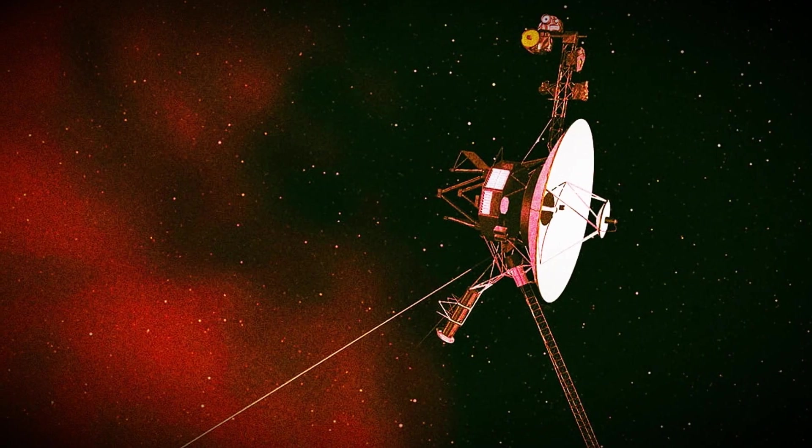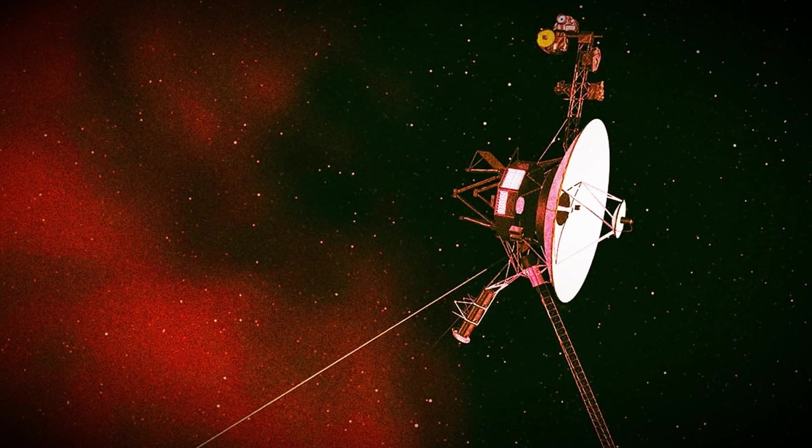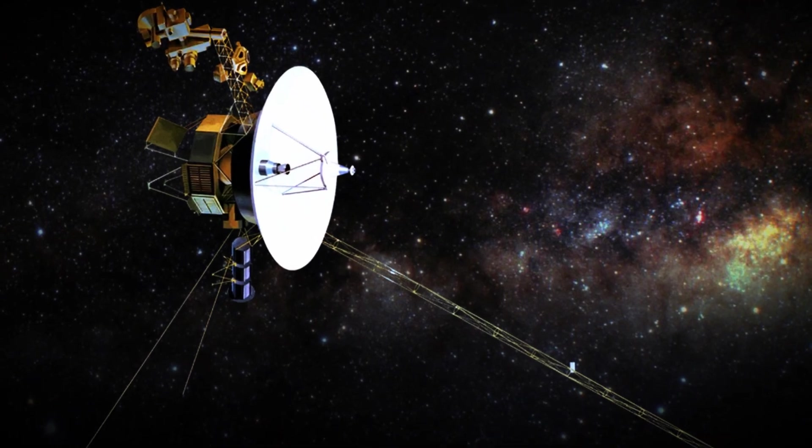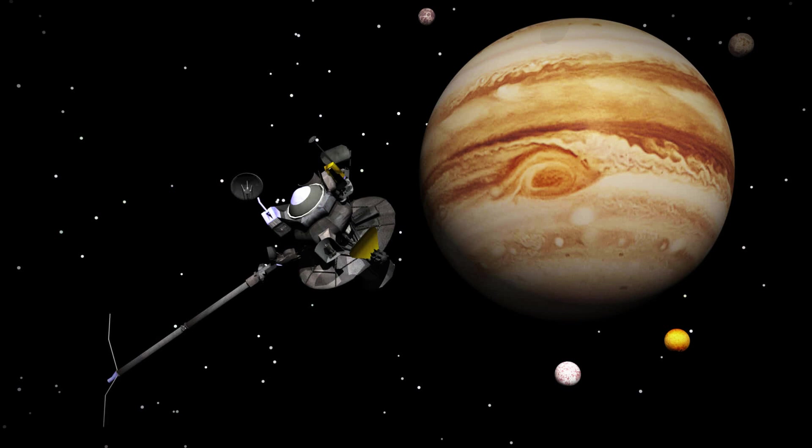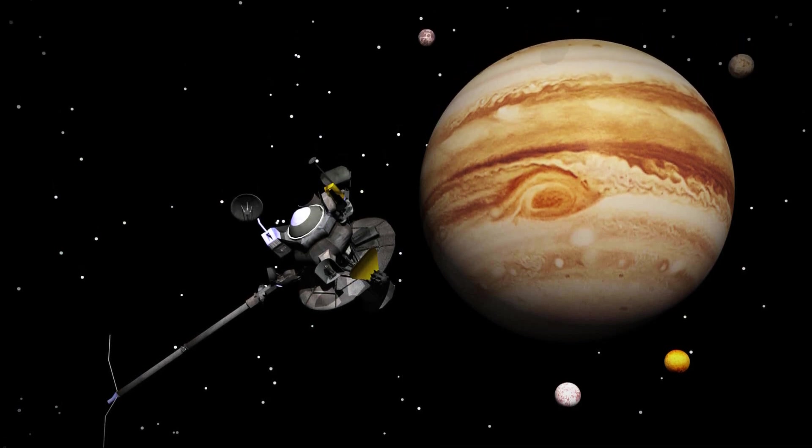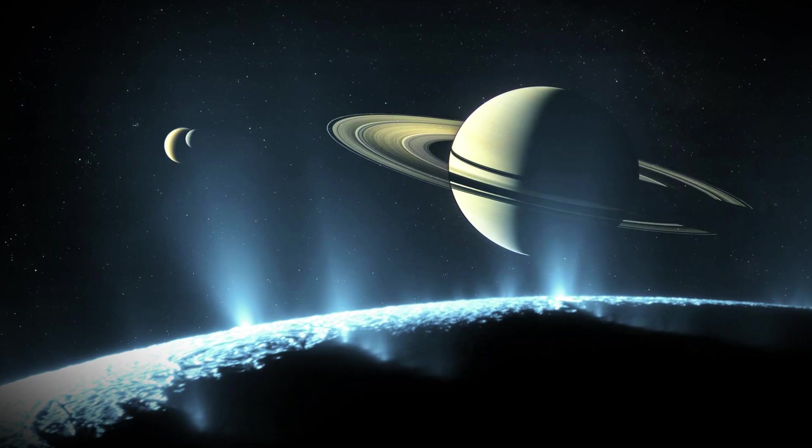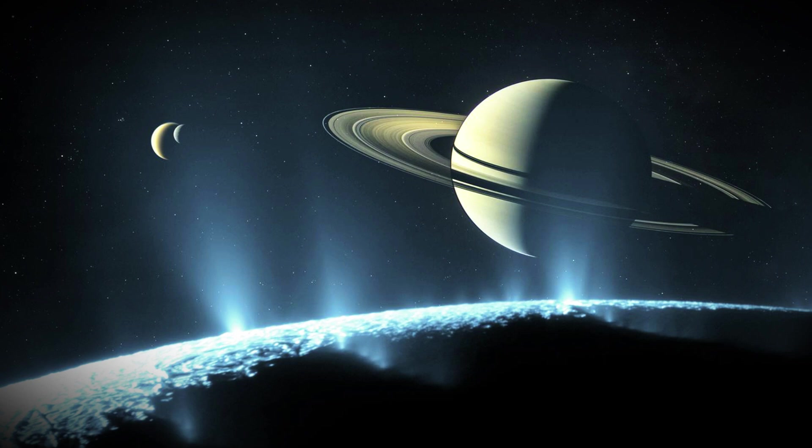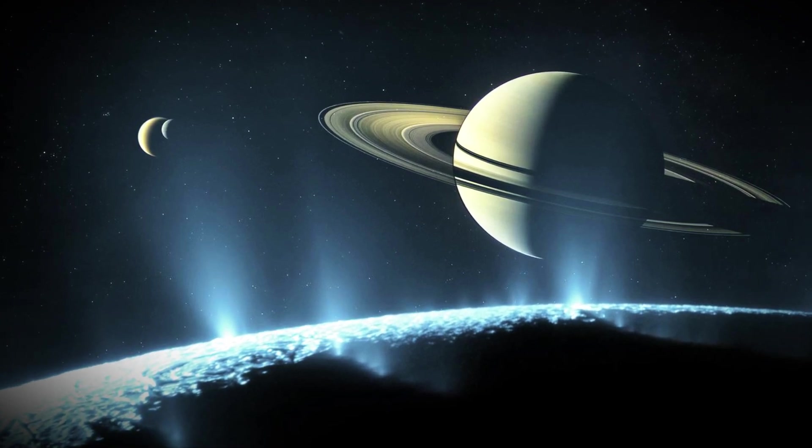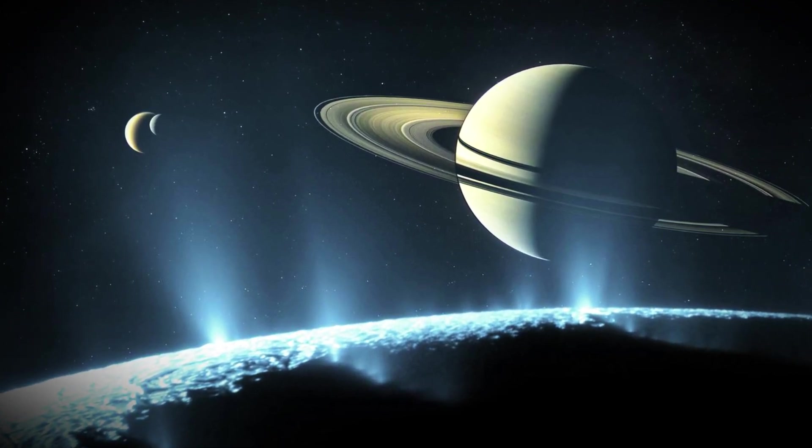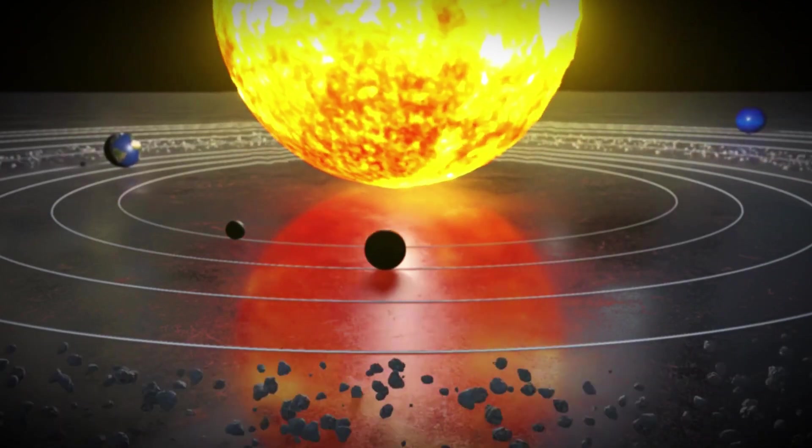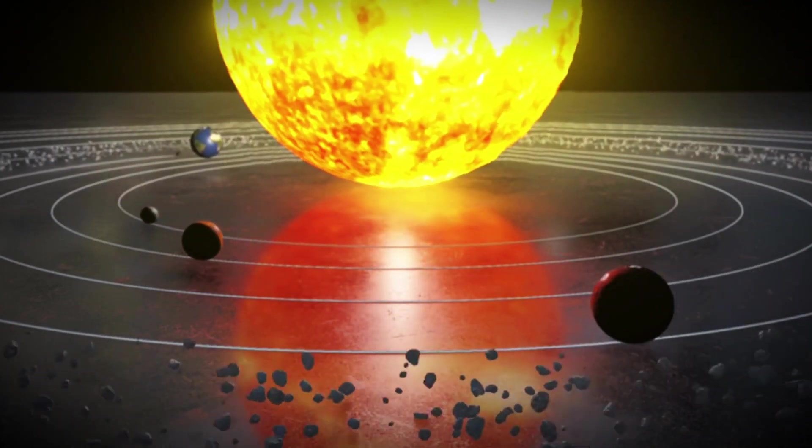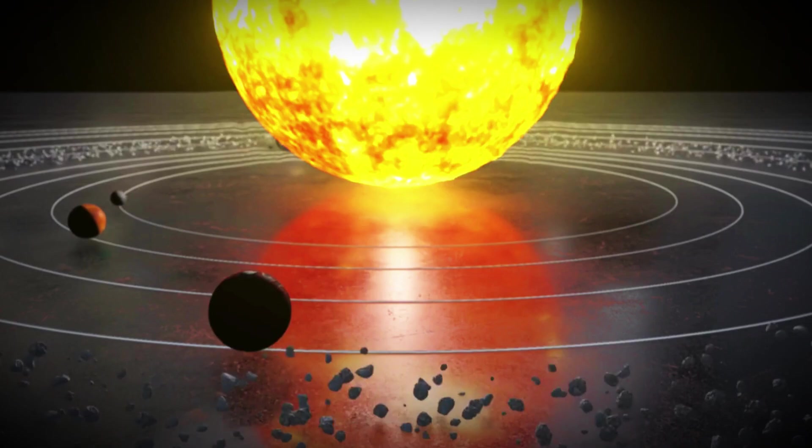While Voyager 1 was making these incredible discoveries, Voyager 2 was already on its way. It reached Jupiter in July 1979, initially confirming many of Voyager 1's findings. But it also uncovered new surprises, providing detailed observations of the planet's rings and numerous moons. Together, the two probes worked in tandem to deepen our understanding of the solar system's largest planet and its moons.